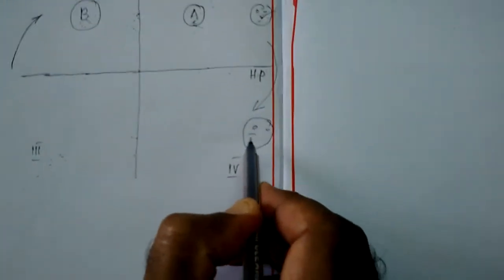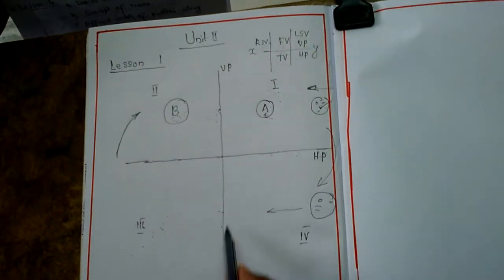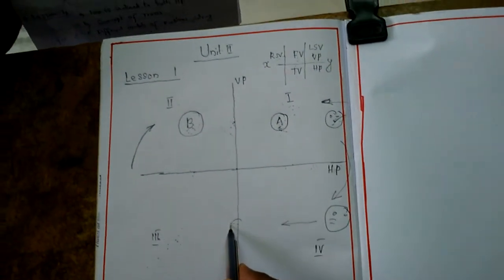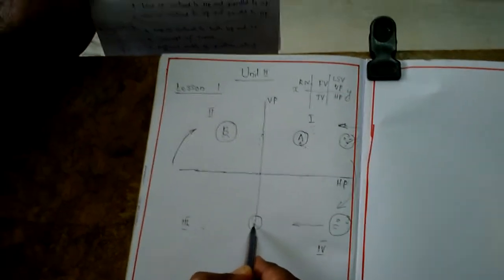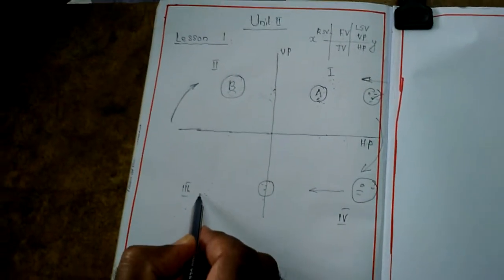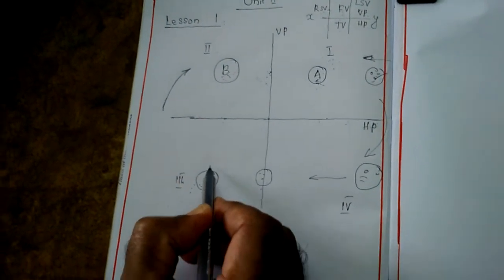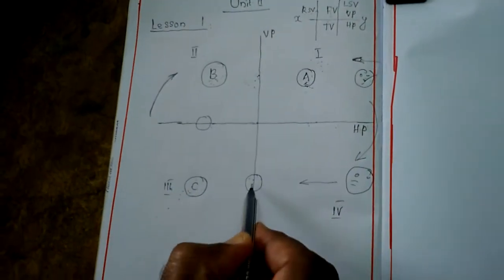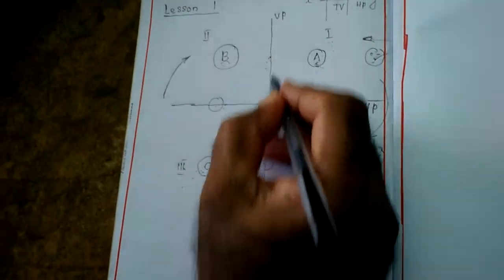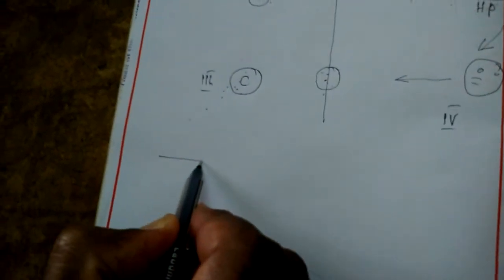When you are the observer and you want to look in a direction, automatically this front view appears because this is a transparent plane. So this is the front view location. Whenever you want to see from the top direction — that is, downward — you get the top view. Suppose C is the object: the front view occupies here and the top view occupies here. Due to the relation of the planes, the top view is above the XY line and the front view is below the XY line.